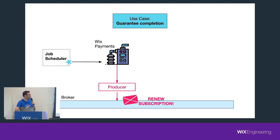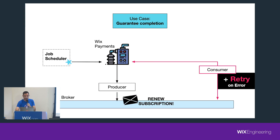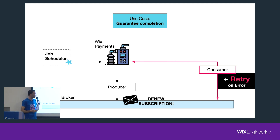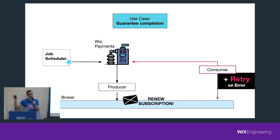The first thing the service does is produce the message to Kafka, so it won't go away. Then the Wix payment service itself consumes it, specifying that it wants to retry in case of a business error. The job scheduler can forget about the job because it's already in Kafka and will be consumed — it doesn't have to worry about it anymore. That's a very powerful thing.